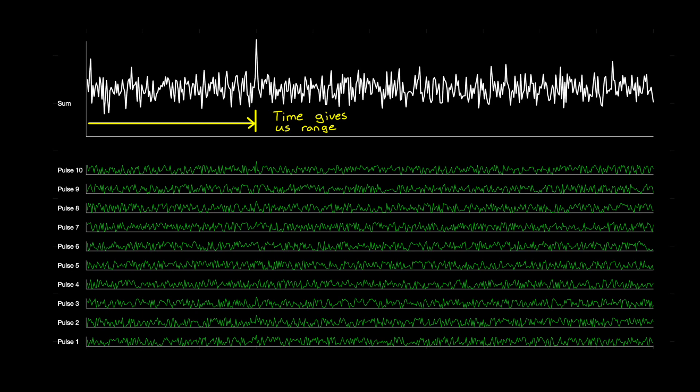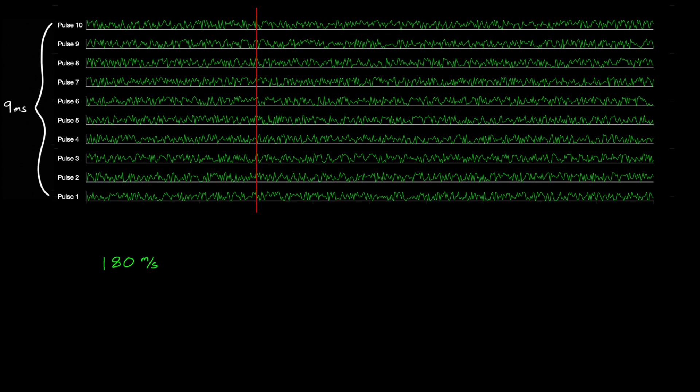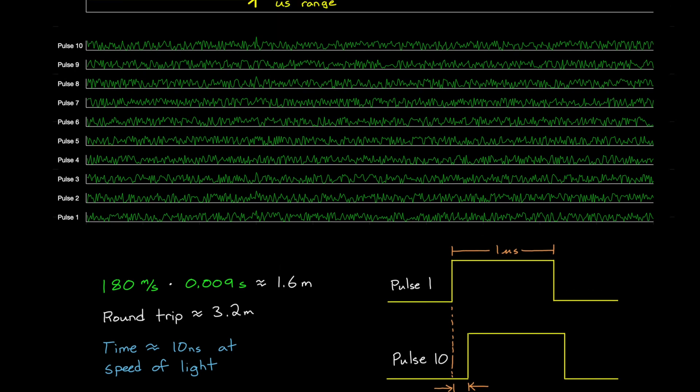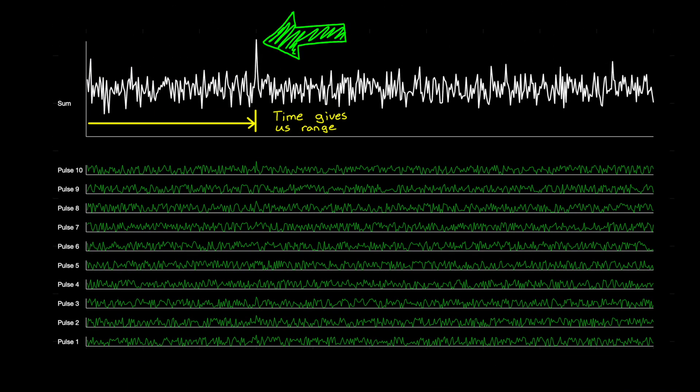Something to note is that we're making the assumption that the range to the object doesn't change from pulse to pulse, since we're expecting the peak to be in the same location each time. And that assumption is pretty good, because remember, the time between pulses in this case is 1 millisecond. So 10 pulses are separated by 9 milliseconds. And how far can an object travel in 9 milliseconds? Well, if it's traveling 180 meters per second, or 400 miles per hour, then the object would have traveled about 1.5 meters. Therefore, the roundtrip distance would be 3 meters longer between the first and tenth pulse. And at the speed of light, 3 meters takes about 10 nanoseconds. And since our pulse width is 1 microsecond, the pulses will still essentially line up perfectly. So hopefully you can see how a matched filter and pulse integration can help narrow the return signal and bring it out of the noise. And then from there, it's just a matter of determining the time between the transmitted pulse and the returned peak to calculate range.